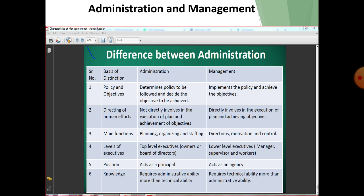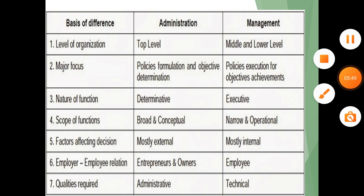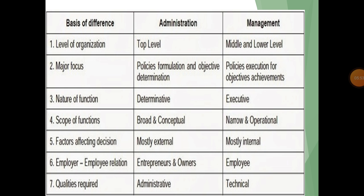In terms of level of organization, administration is at the top level and management is at the middle or lower level. The major focus — the nature of function in administration is determined by executive scope, which is broad; in management it is narrow or operational. Factors affecting decisions in administration are mostly external, while in management they are mostly internal. Administration is the owner of the organization while management is the employee.